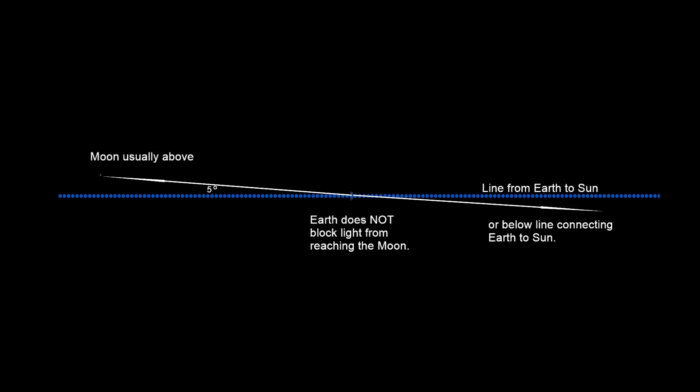The actual tilt is very small, only about 5 degrees, but it is enough to move the moon above or below the earth-sun line most of the time when the true distance scales are considered.